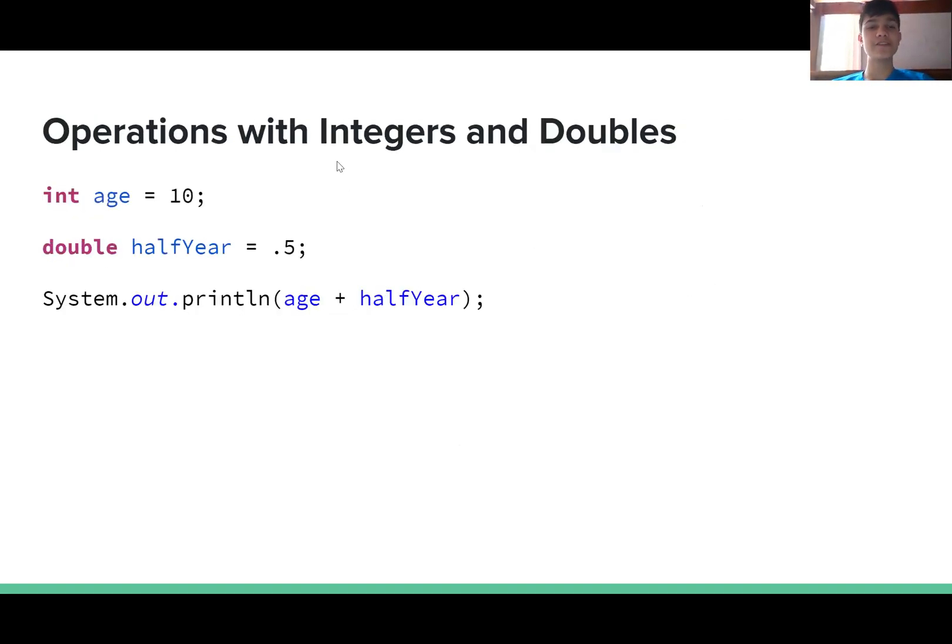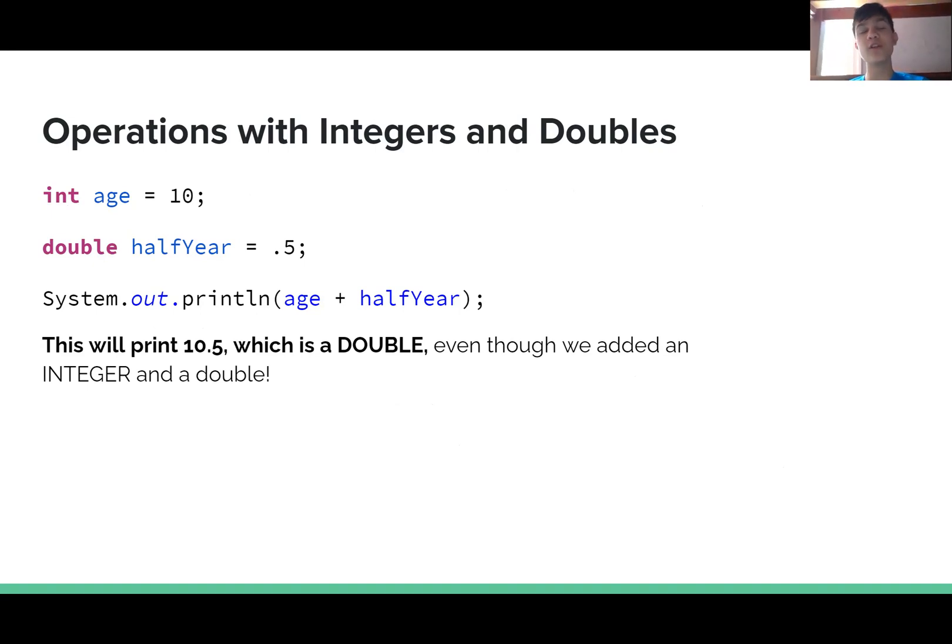Operations with integers and doubles. We have int age equals 10, and let's say we want to add a half year to our age. Double halfYear equals 0.5. We have a print statement where we add age and halfYear together, and the result is 10.5, which is a double even though we add an integer and a double. Whenever you do mathematical operations with doubles and integers, the result will always be a double.